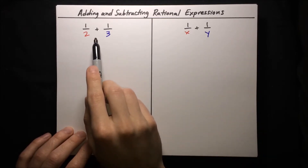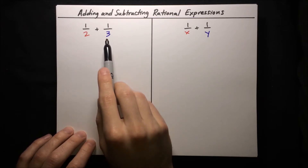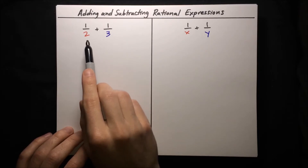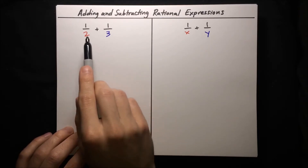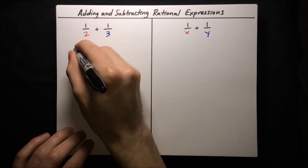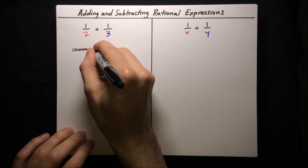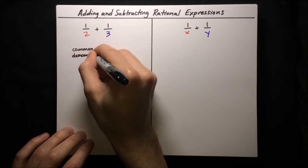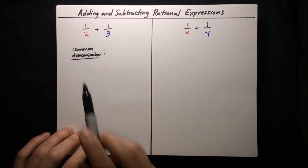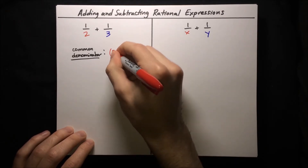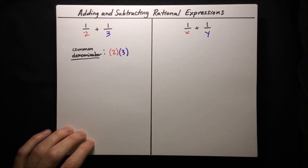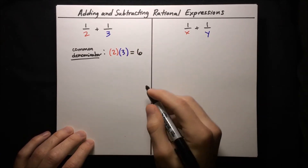Looking at this example from arithmetic: one half plus one-third — how do we add these two fractions? Remember that we can't add fractions unless they have the same denominator. So our first step is to convert these fractions into equivalent fractions which have the same denominator. We need to find a common denominator. One way to find a common denominator is just to multiply the two denominators together, so we can multiply 2 and 3: 2 times 3 is 6, and that can be our common denominator.